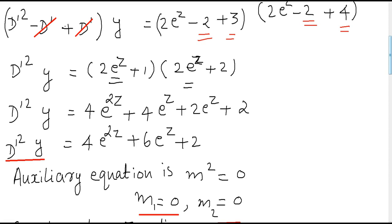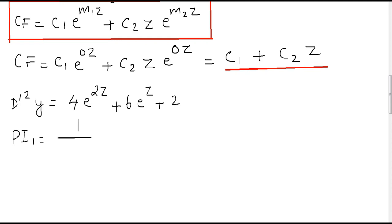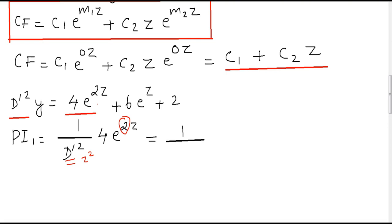Now we find the particular integral. PI₁ = (1/D'²) · 4e²ᶻ. The coefficient of z in e²ᶻ is 2, so we replace D'² with 2² = 4. This gives (1/4) · 4e²ᶻ = e²ᶻ.